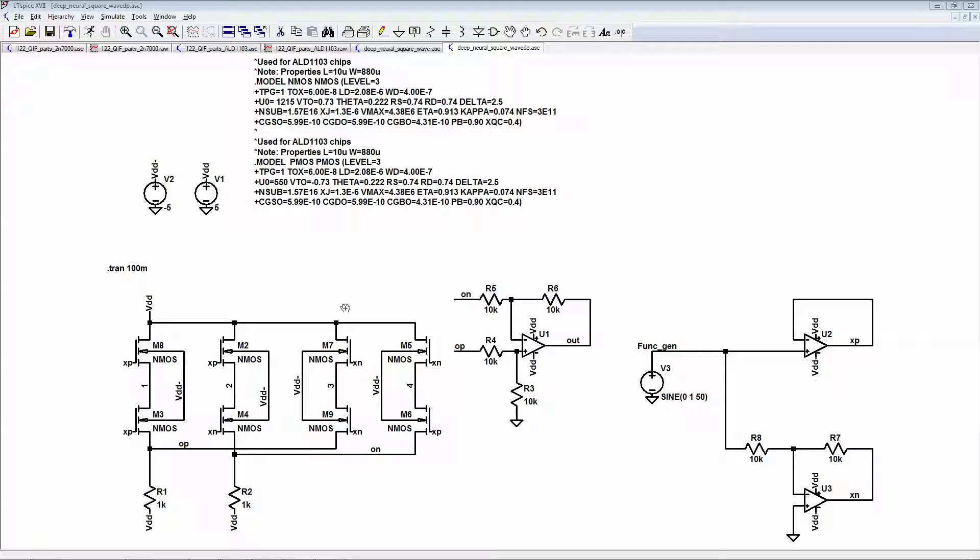Alright, let's test the multiplier that our research group has designed. We have a function generator with a single input, and these multipliers need some kind of differential signaling. So we just use a buffer to get the positive end and use an inverting op amp to get the negative part.